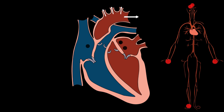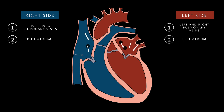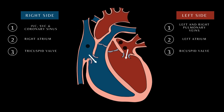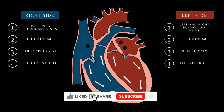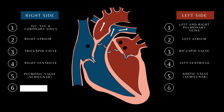Here is the full sequence of cardiac events of both the left and right sides of the heart occurring simultaneously. Blood enters the vena cava and pulmonary veins, then enters the atria, passes through the atrioventricular valves, blood enters the ventricles, passes through the semilunar valves, and blood enters the pulmonary arteries and aorta.